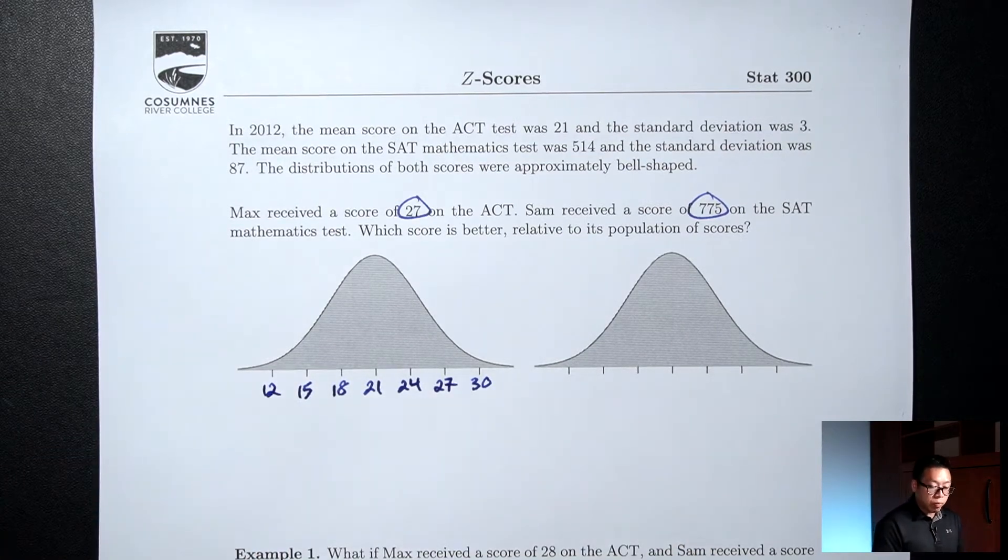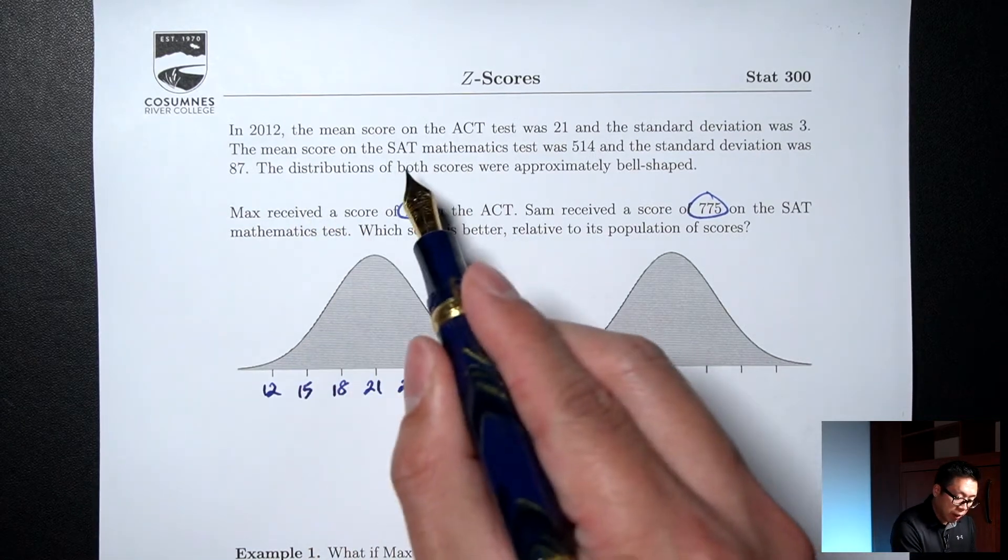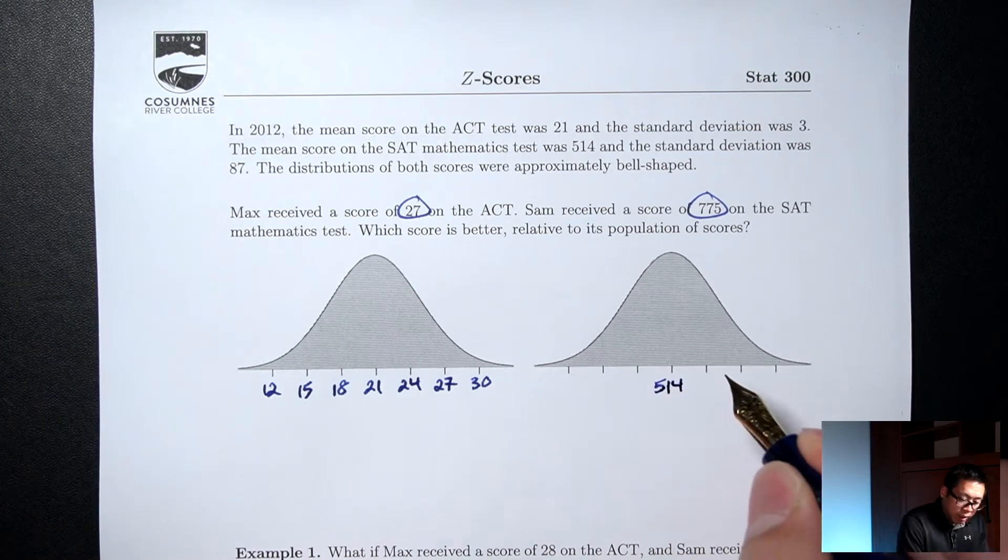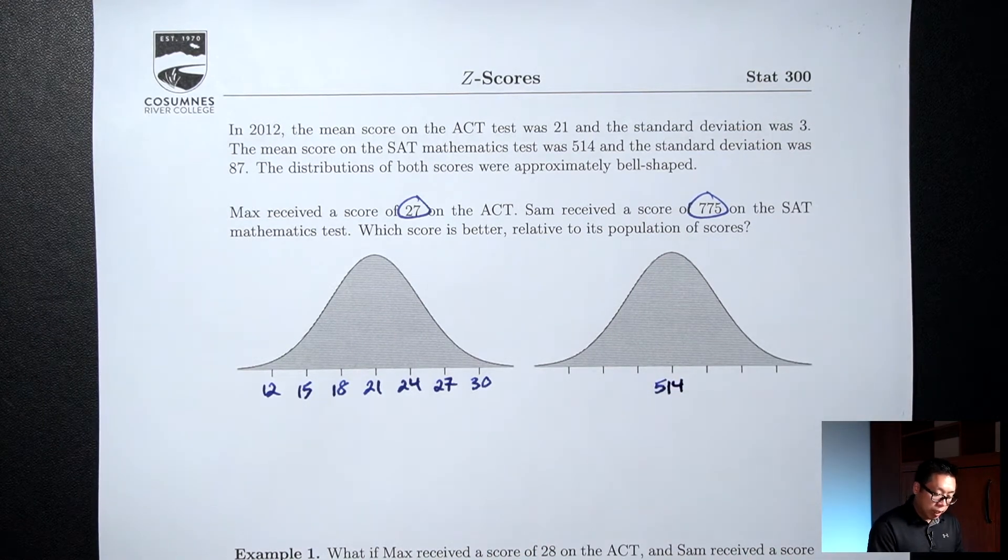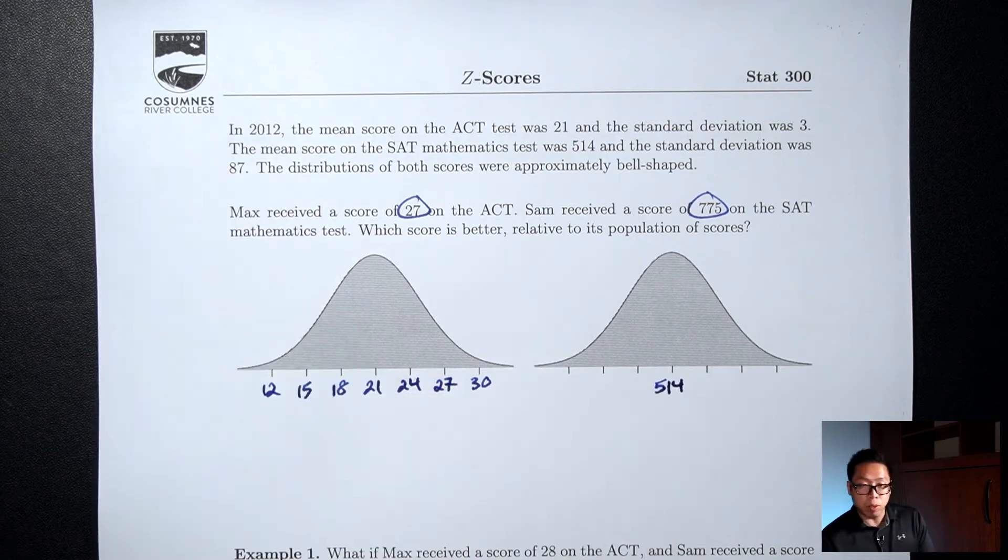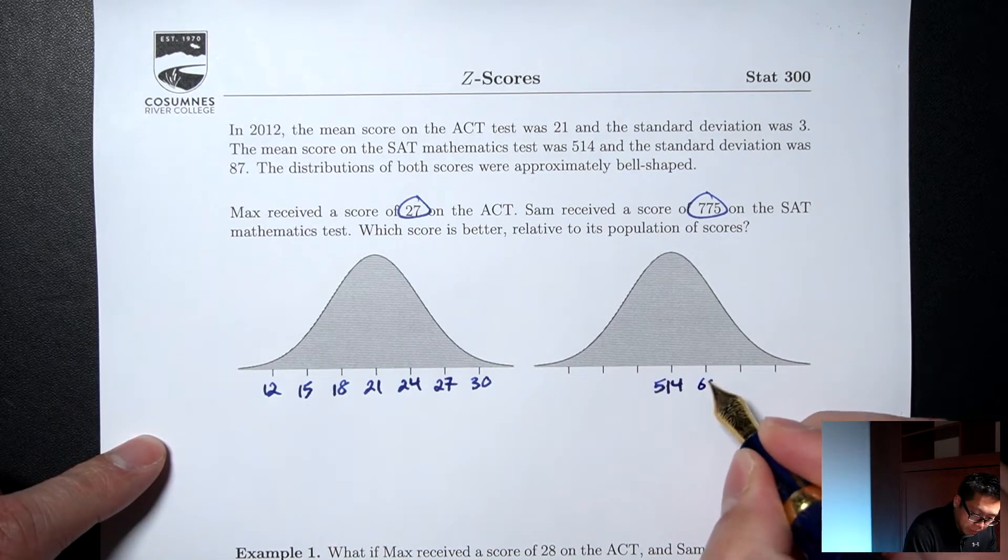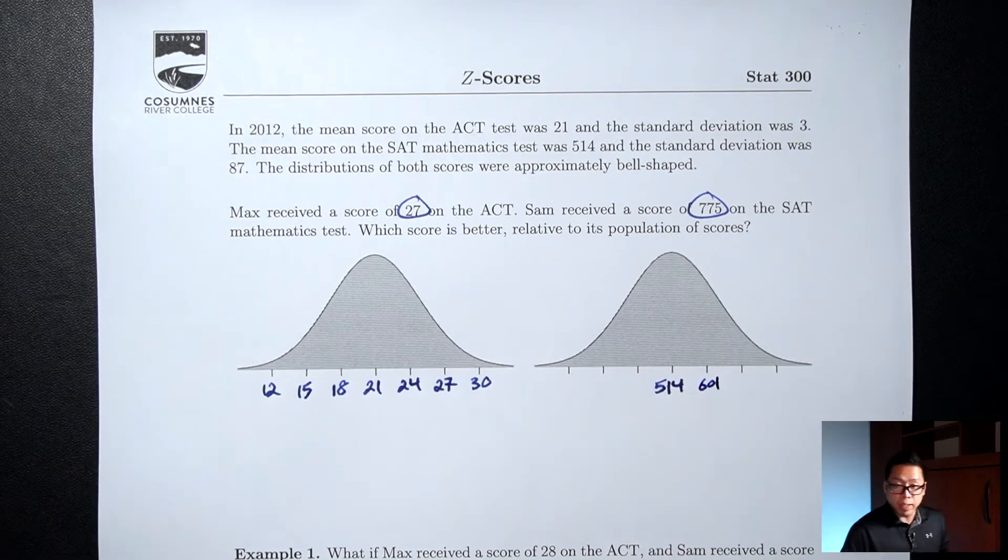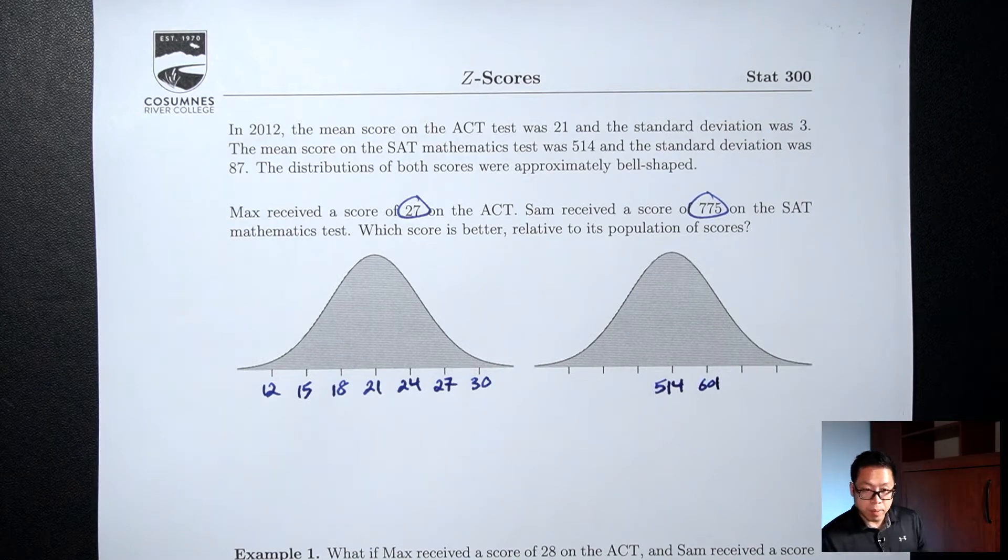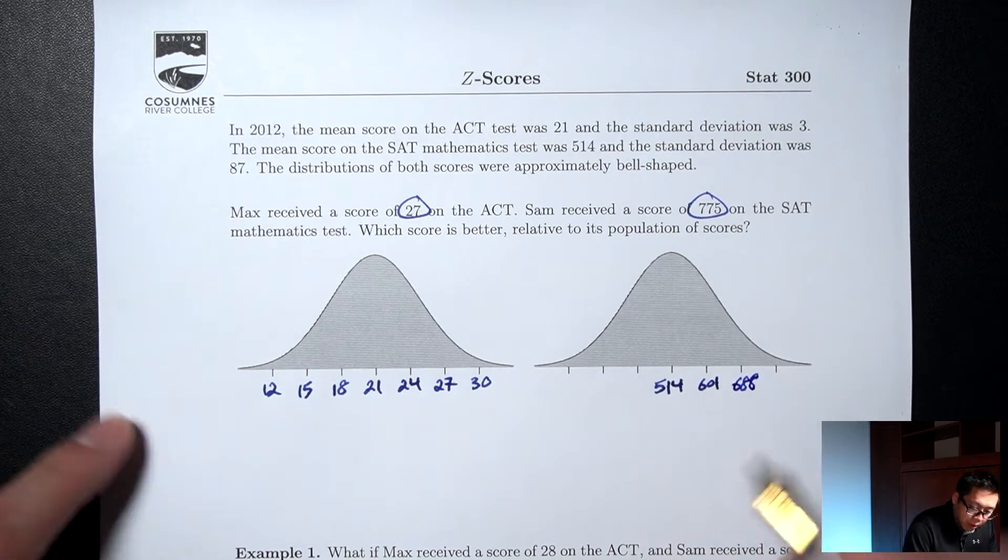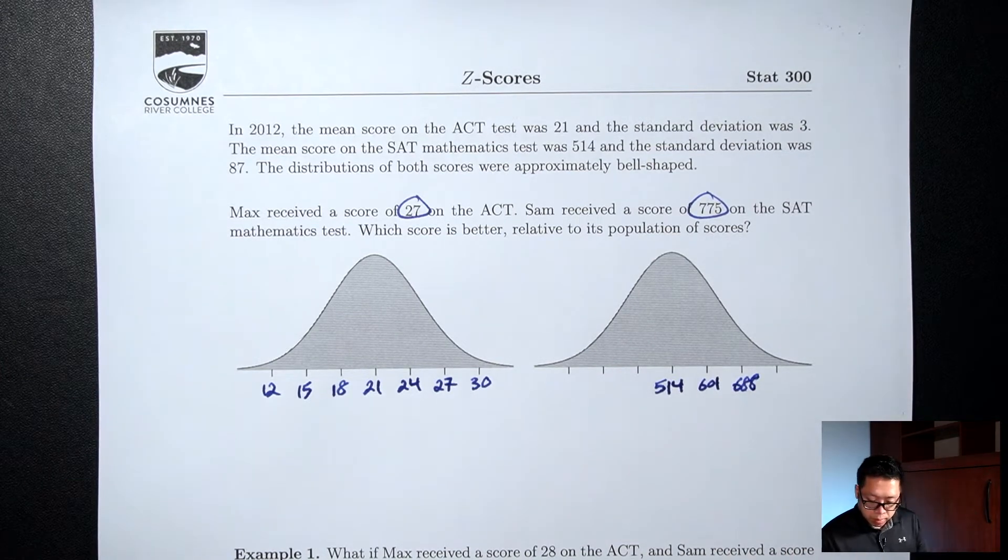And then we'll do the same thing for the SAT math. The mean for the SAT math was 514. That goes in the middle. Go up 3 times, so 514 plus the standard deviation which was 87. So 514 plus 87, 601. Plus 87 again, 688. Plus 87 one last time, 775.